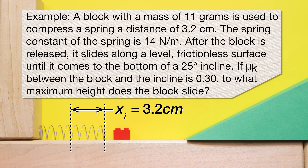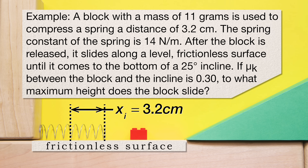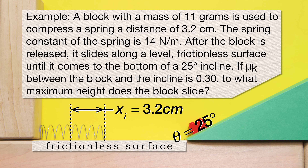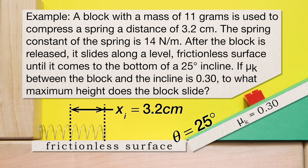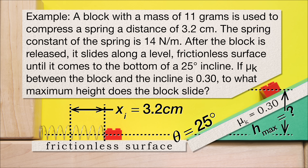it slides along a level frictionless surface until it comes to the bottom of a 25 degree incline. If the coefficient of kinetic friction between the block and the incline is 0.30, to what maximum height does the block slide?